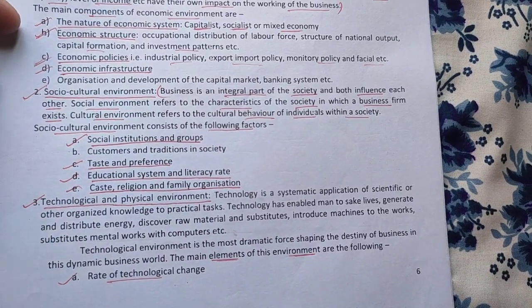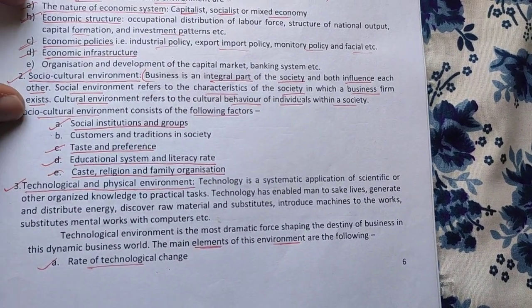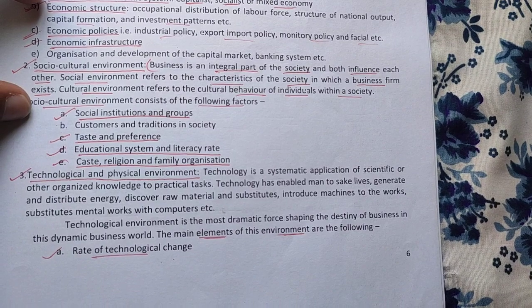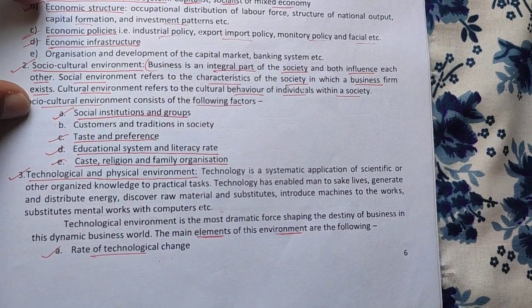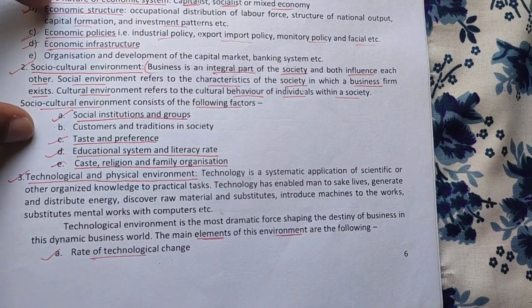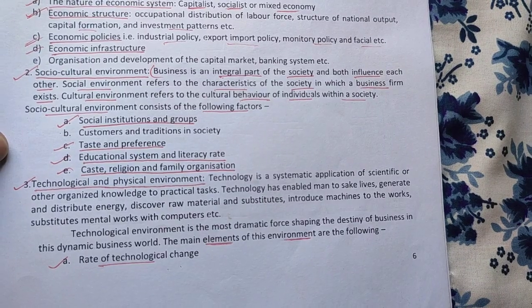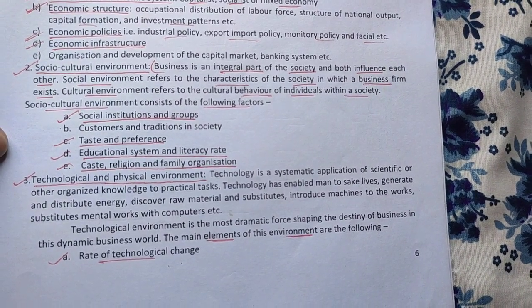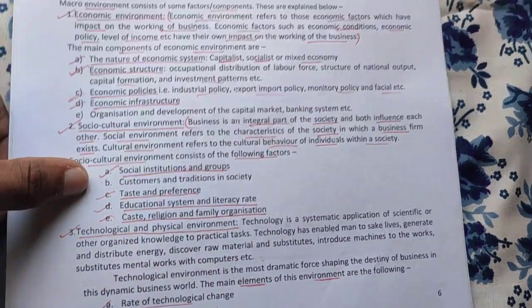The second is the socio-cultural environment. The factors of socio-cultural environment include: social institutions and groups, customs and traditions in society, tastes and preferences, education system and literacy rate, caste, religion, and family organization.